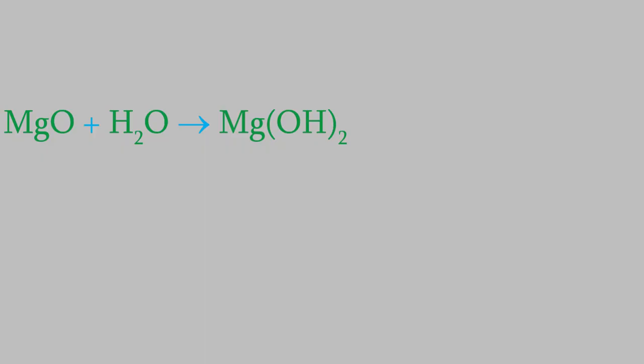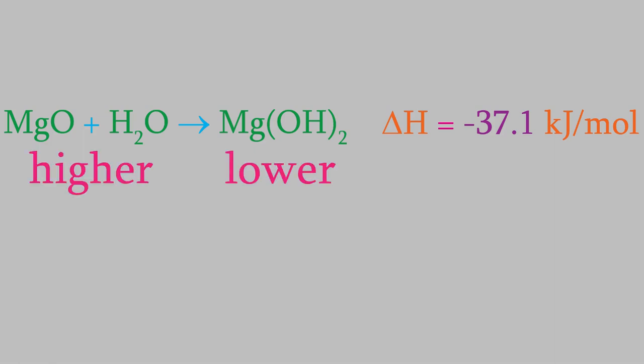For example, here's the reaction between magnesium oxide and water. This is one of the many reactions already studied, so we know it has an enthalpy of negative 37.1 kilojoules per mole. The enthalpy is a negative number, which means the products have lower enthalpy than the reactants, making this an exothermic reaction. The units are kilojoules per mole, meaning 37.1 kilojoules — that's 37,100 joules — is released for every mole of the product, magnesium hydroxide.